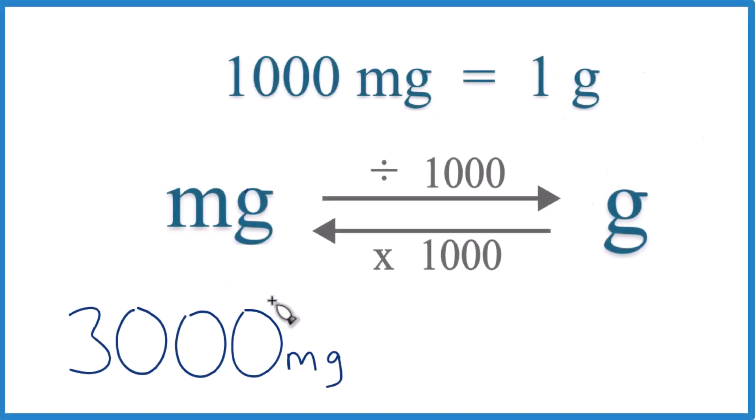If you're asked to convert 3,000 milligrams to grams, here's how you do it. There are 1,000 milligrams in 1 gram. So 1,000 milligrams equals 1 gram - something you just need to memorize.